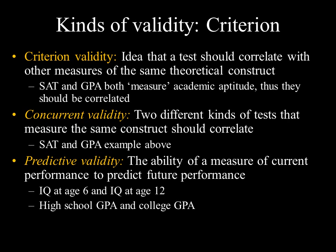Criterion validity is the idea that a test should correlate with other measures of the same theoretical construct. For example, the SAT and GPA both measure academic aptitude, so you'd expect them to correlate — high SAT score should predict high GPA. The two subcomponents are concurrent validity and predictive validity. Concurrent validity means two different tests measuring the same construct should yield the same result; it would be unusual for a student to score perfect on the SAT yet have a GPA in the one-point range.